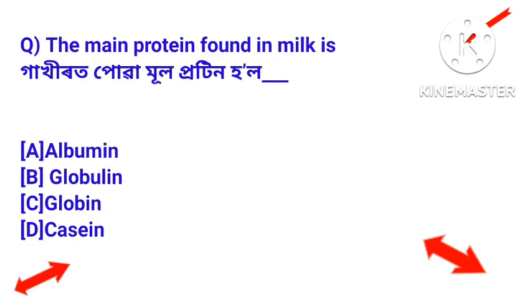The main protein found in milk is casein. Casein is the primary protein found in milk.